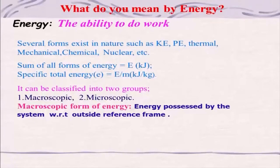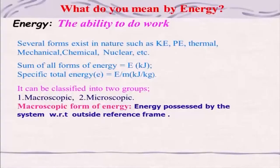This energy can be broadly classified into two categories: macroscopic form of energy and microscopic form of energy. The microscopic form is related to molecules, atoms, and their activities, whereas the macroscopic form of energy is possessed by the system with respect to an outside reference frame. In thermodynamics we will be dealing mostly with macroscopic forms, but we will also discuss microscopic energy a little bit.